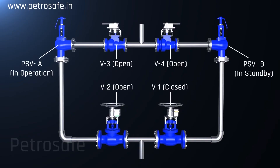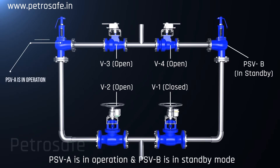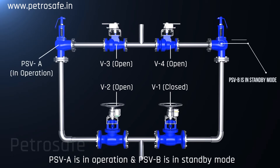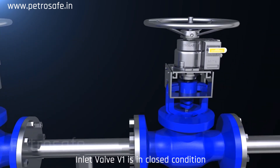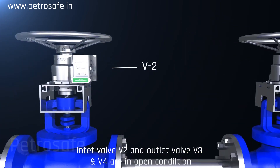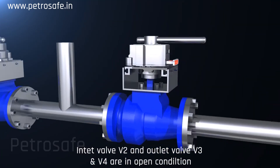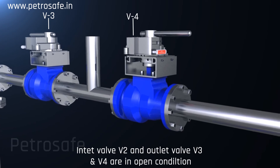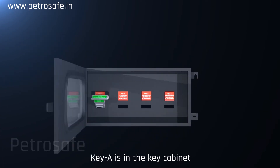Let us see the safe operation of a PSV using a valve interlocking system with a predetermined sequence. The current situation is as follows: PSV A is in operation and PSV B is in standby mode. Inlet valve V1 is in closed condition. Inlet valve V2 and outlet valves V3 and V4 are in open condition. Key A is in the key cabinet.